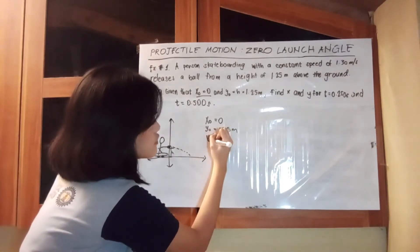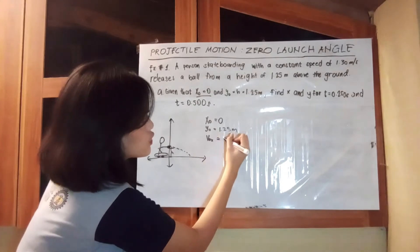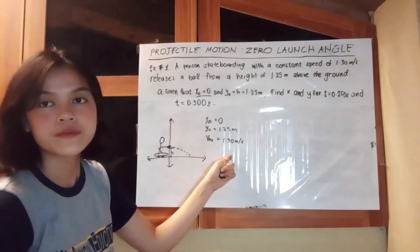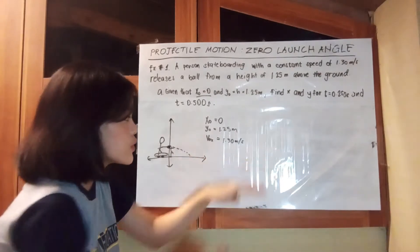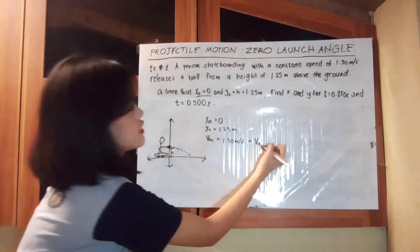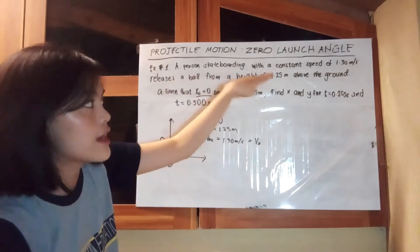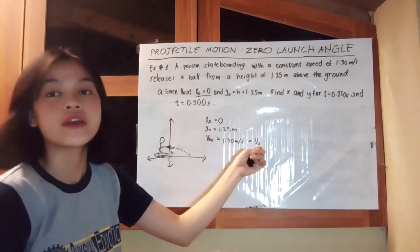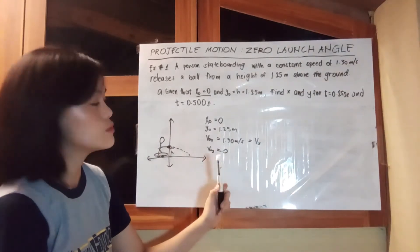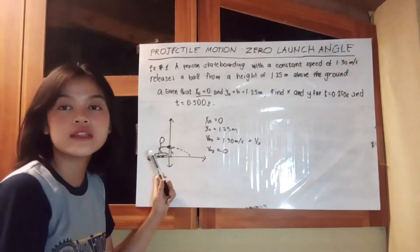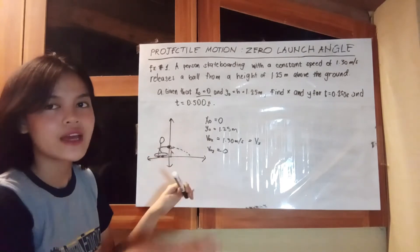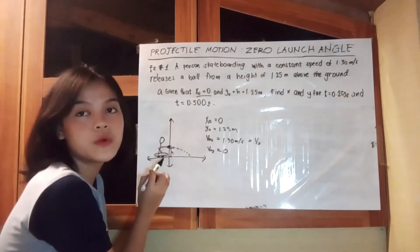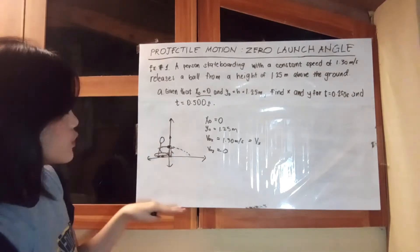Our initial velocity for x is equivalent to 1.30 meters per second, which is also our final velocity for x, because it has a constant speed — meaning it did not change. For the velocity in the y-component, it will be equivalent to 0, because the ball started from rest and hadn't been moving until the boy released it.